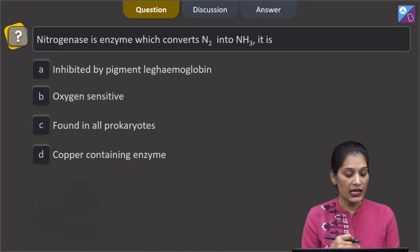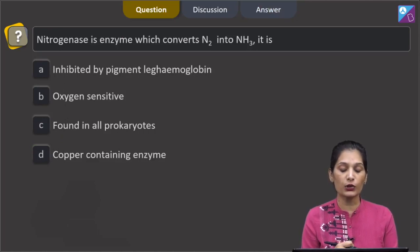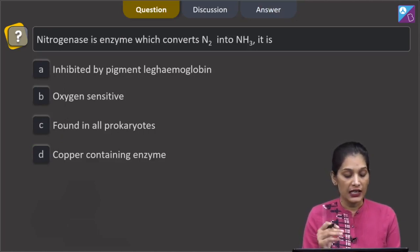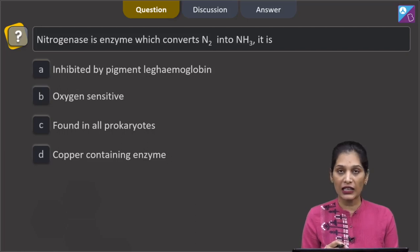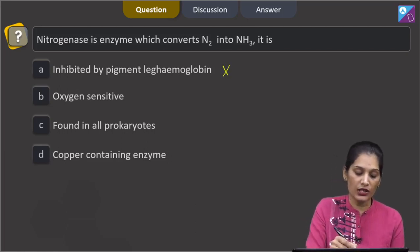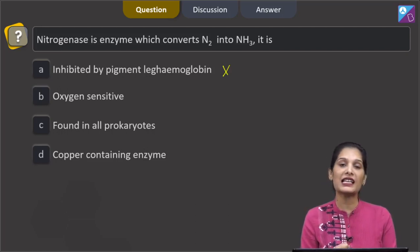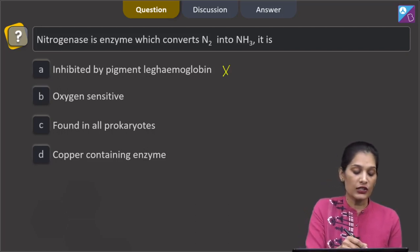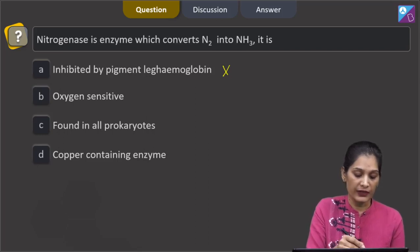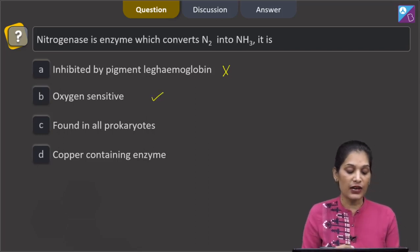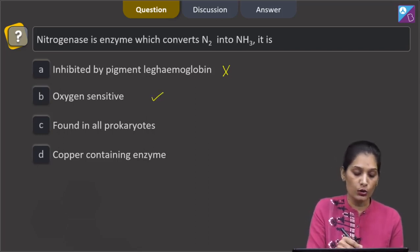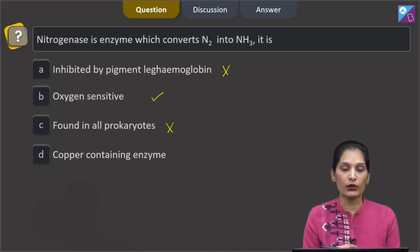This question is asking nitrogenase is enzyme which converts N2 into NH3. It is inhibited by pigment leg hemoglobin? No. Nitrogenase is protected by the pigment leg hemoglobin as it is sensitive to oxygen. It is oxygen sensitive? Yes. It is found in all prokaryotes? No.